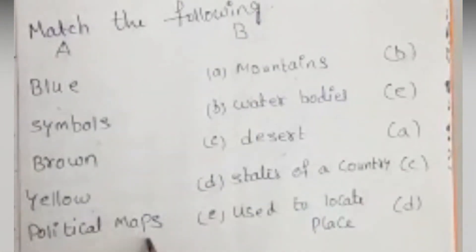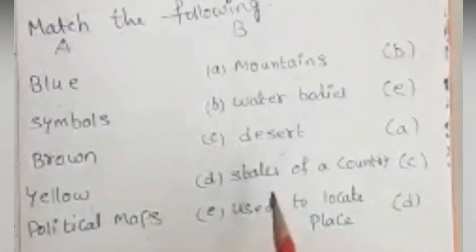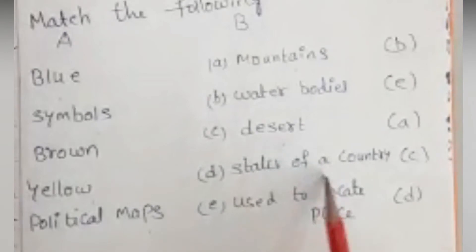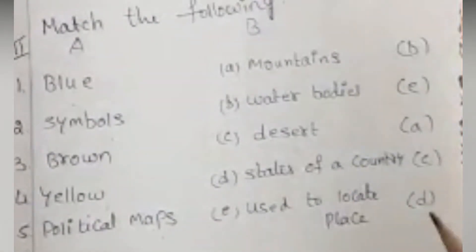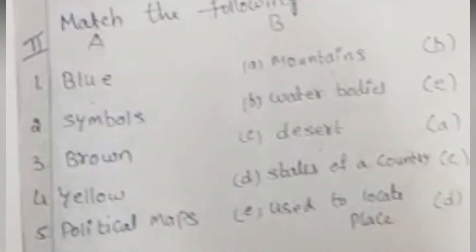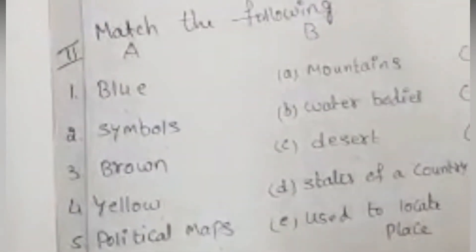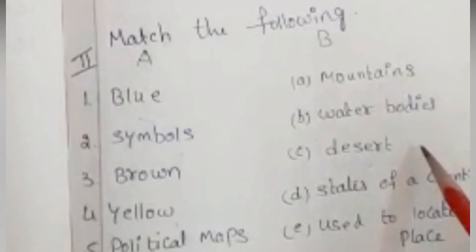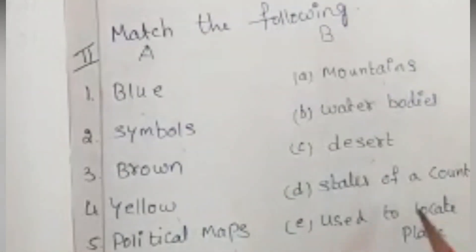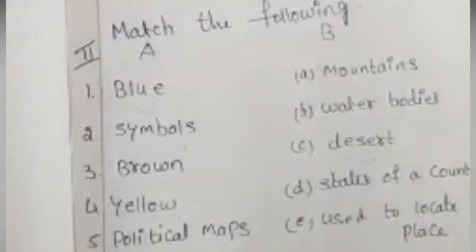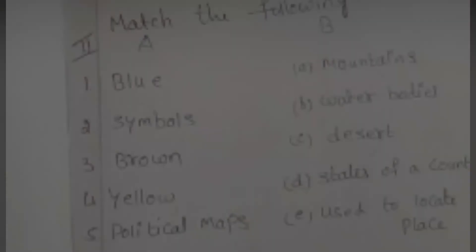Fifth one: Political Maps — the answer is States of a Country. Children, you have to learn these question answers and match the following thoroughly, and do practice with spellings.